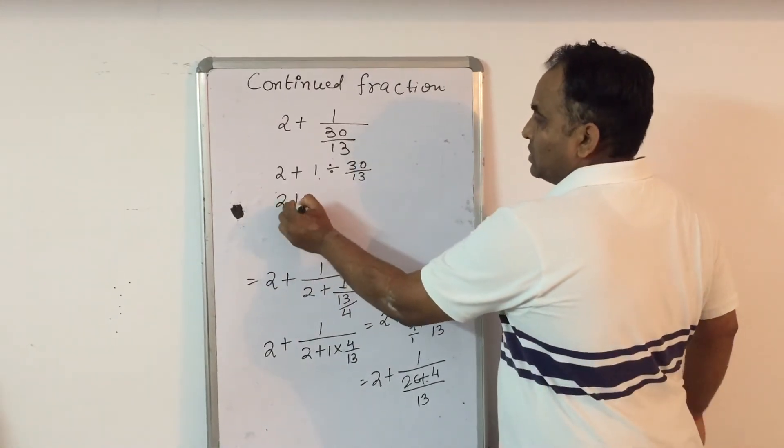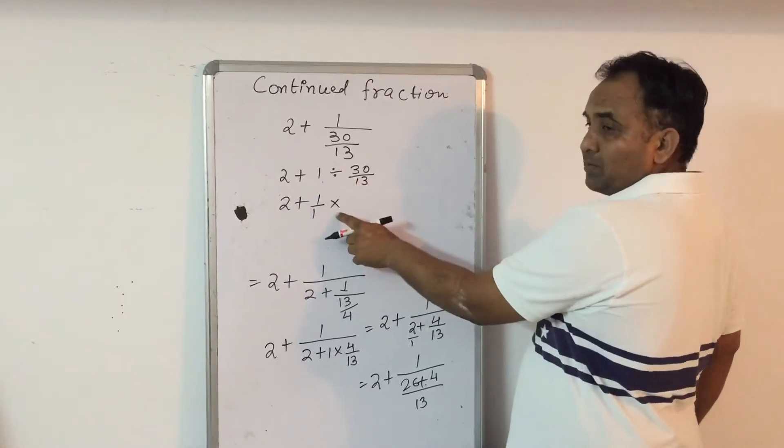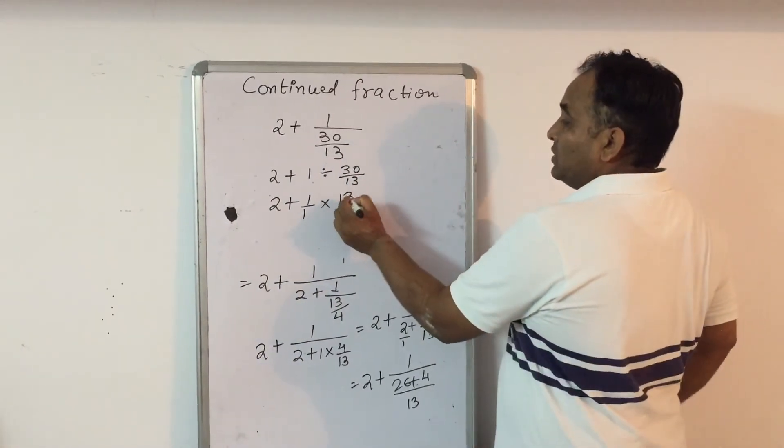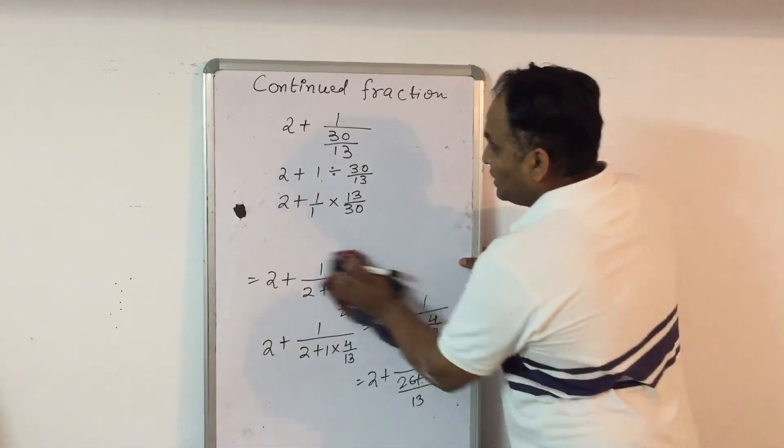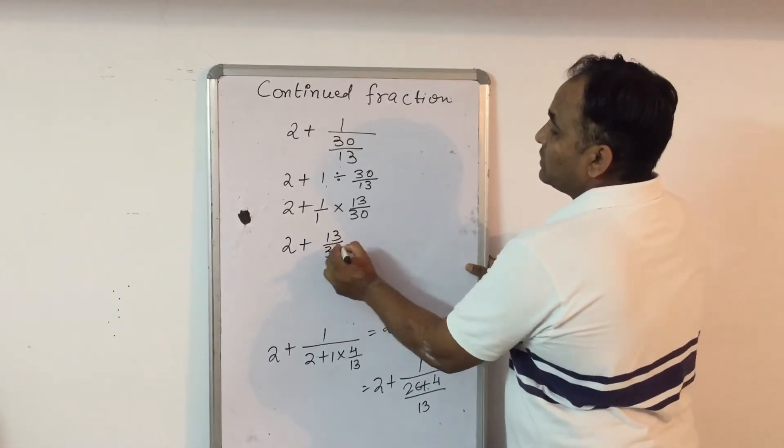Now, using the BODMAS rule, 1 can be written as 1 upon 1. This division sign has been replaced with multiplication and this divisor fraction will be reciprocated. Since any number multiplied with 1 gives you the same result, we are getting 2 plus 13 upon 30.